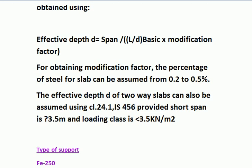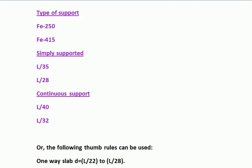The effective depth of a two-way slab can also be assumed using Clause 24.1 of IS 456, provided the short span is 3.5 meters and loading class is less than 3.5 kN/m². For type of support: simply supported with Fe 250 steel, the ratio is L/35, and with Fe 415 steel it is L/28. For continuous support, it is L/40 for Fe 250 and L/32 for Fe 415.